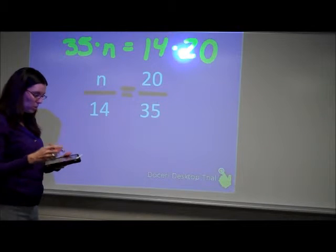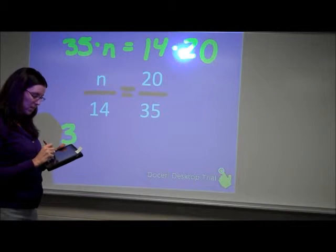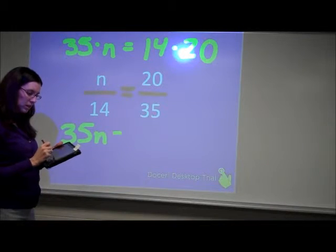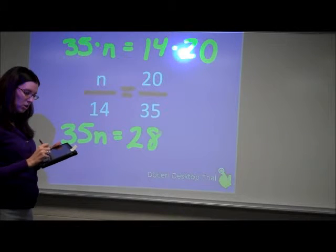Simplifying this, we would have 35n is equal to 280.